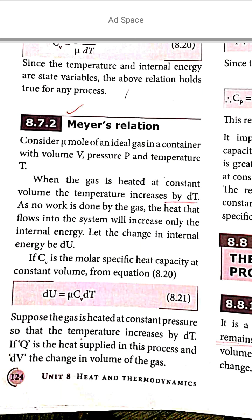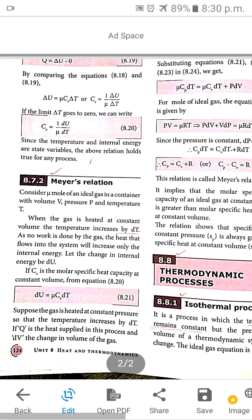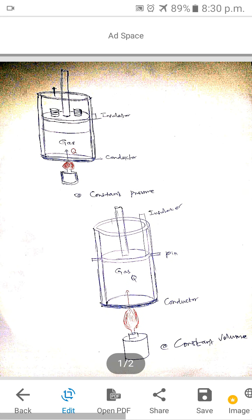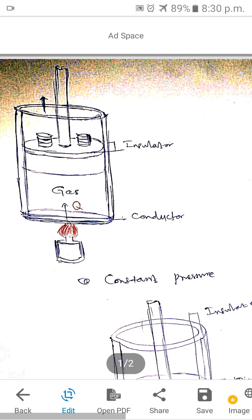We consider an ideal gas in a container with state variables: volume, pressure, and temperature. There are two conditions: first, ideal gas at constant volume with heat applied; second, ideal gas at constant pressure with heat applied. The first diagram shows ideal gas at constant pressure heat.